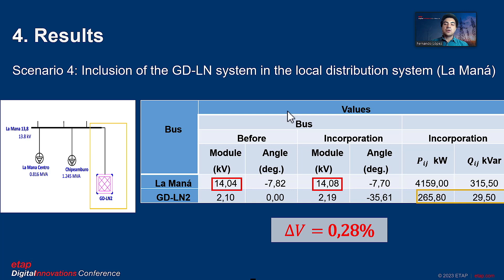For the Lamanha substation, a voltage variation of 0.28% and an angle variation of 1.53% is obtained.